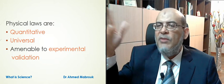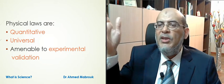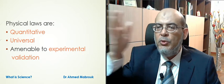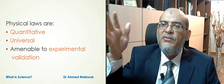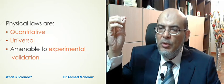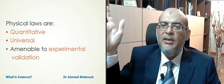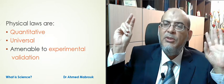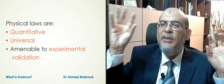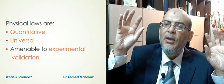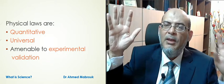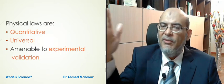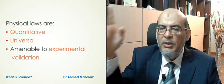Number two, physical laws are also universal in the sense that they apply anywhere. Take, for example, Newton's law of gravitational force — it applies to planetary motion, projectiles, and tidal forces. All these phenomena are described by the same law. And number three, in most experiments of physics, they are amenable to experimental validation. So these three factors — quantitative, universal, and amenable to experimental validation — are in nice agreement with the scientific method.